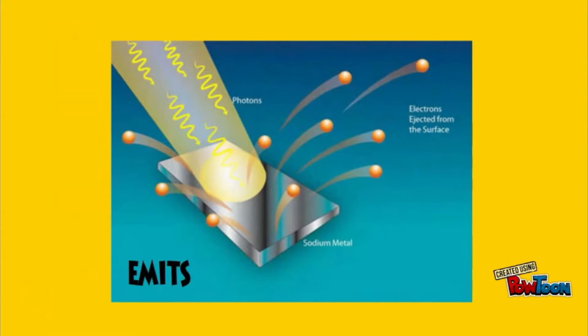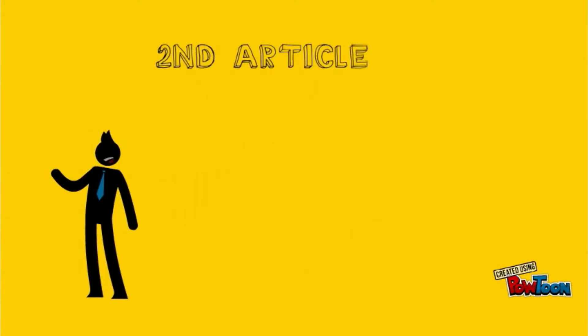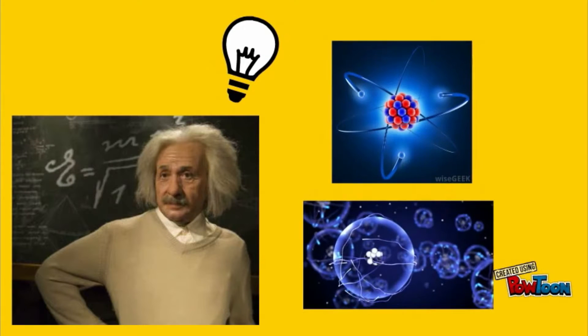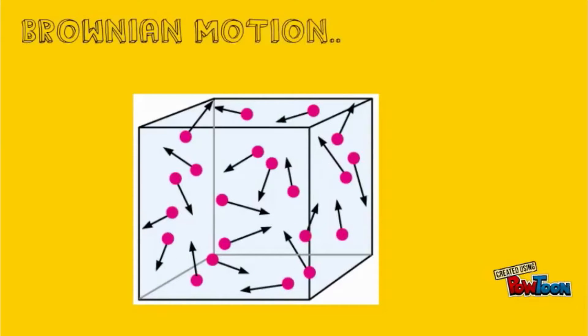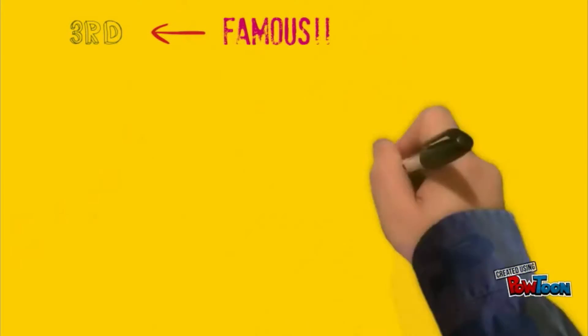In the first paper, he applied the quantum theory developed by German physicist Max Planck to light in order to explain the phenomenon known as the photoelectric effect, by which a material will emit electrically charged particles when hit by light. The second article contained Einstein's experimental proof of the existence of atoms, which he got by analyzing the phenomenon of Brownian motion, in which tiny particles were suspended in water.